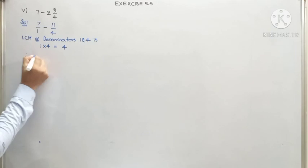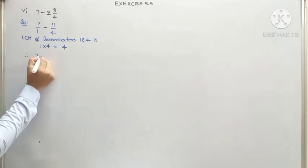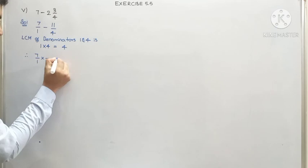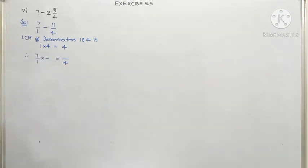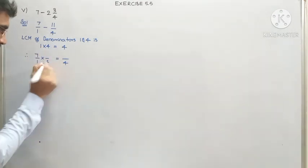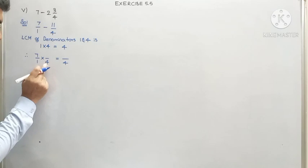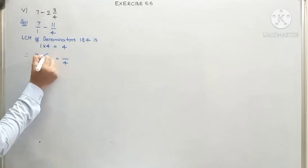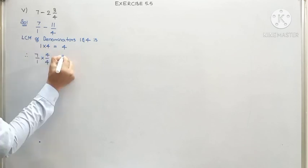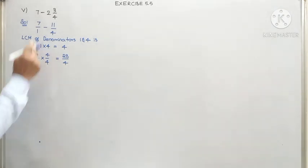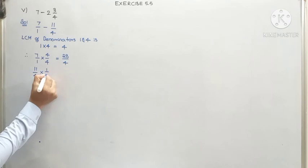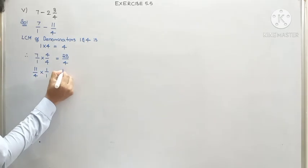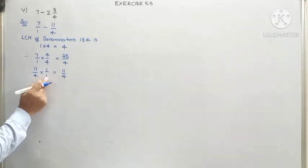Therefore the fraction 7 by 1 should be multiplied by another fraction so that the denominator becomes 4, which is the LCM. We get that by multiplying 1 with 4 — 4 times gives us 4 — and this 4 is given to the numerator, so 7 times 4 gives us 28. The other fraction 11 by 4, multiplied by 1 over 1, gives us 11 by 4 back, because 4 times 1 is 4.